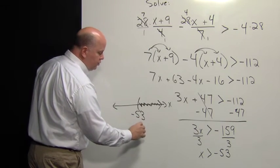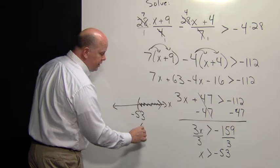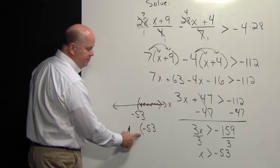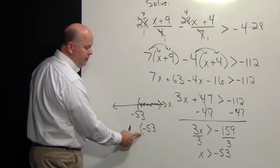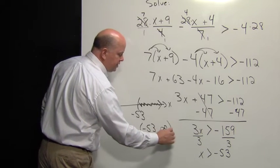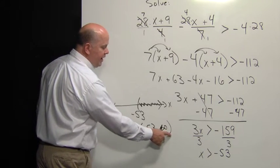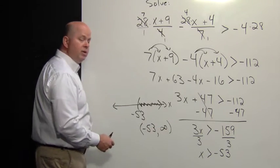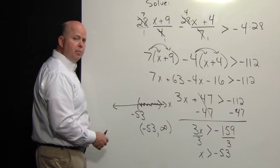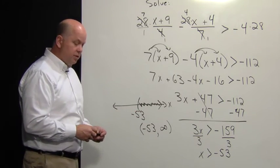This translates beautifully to interval notation, where we have negative 53 with our parenthesis, because it's not included in the solution set, all the way up to positive infinity. Positive and negative infinity always have a parenthesis and not a square bracket as part of the solution.